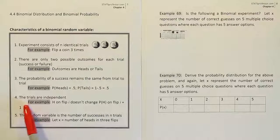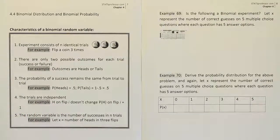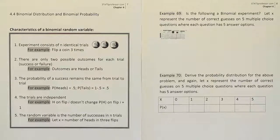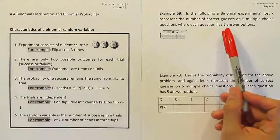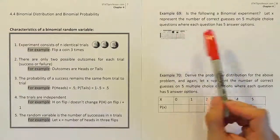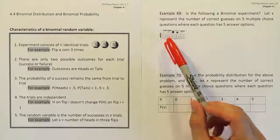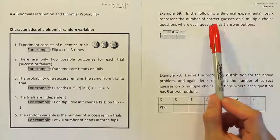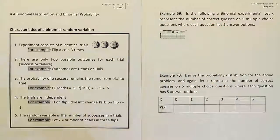Criteria four says the trials are independent — meaning one guess does not affect another guess's likelihood of being correct. If we're just taking random guesses without even reading the questions, I don't see how one question could affect another question's likelihood of being correct. So the trials are independent.